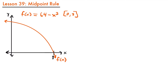Welcome back. Today we're going to be talking about the midpoint rule. The midpoint rule is another method of approximating the area under a function. Previously when we've been approximating the area under a curve, we have been using rectangles with either left or right endpoints.